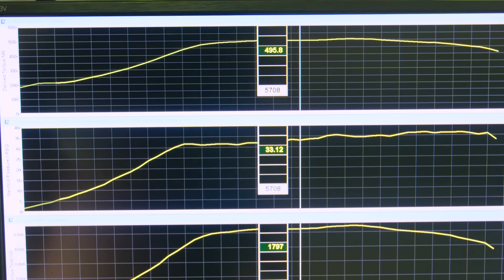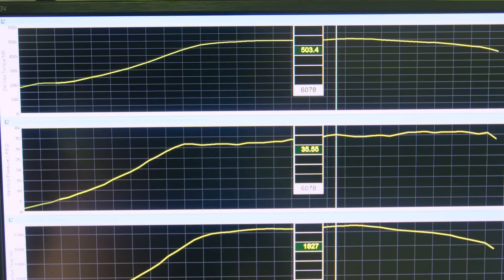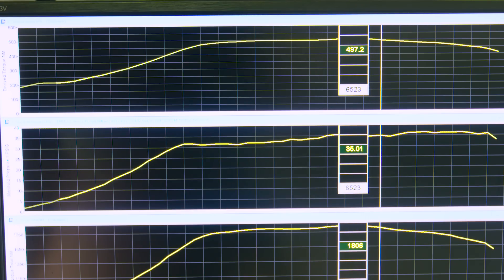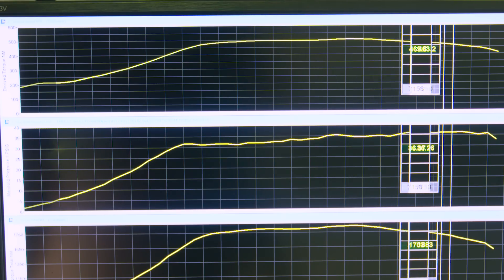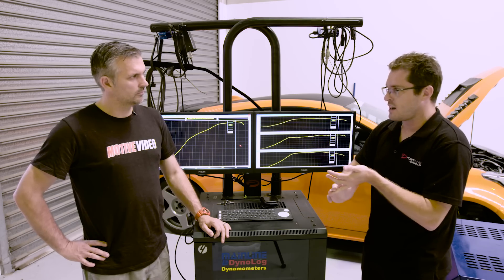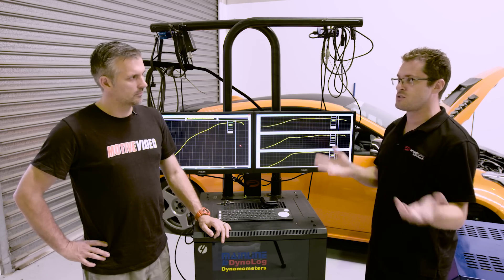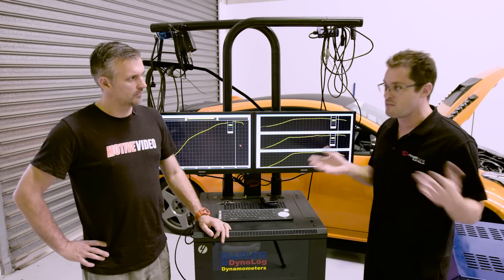So what that means is that we can actually start to manage the boost that the car is running in order to maintain that same torque number across the board throughout the rev range. Let's say for example at 4,500 RPM we might only have 30 pounds of boost in it because the car's making 500 Nm of torque.